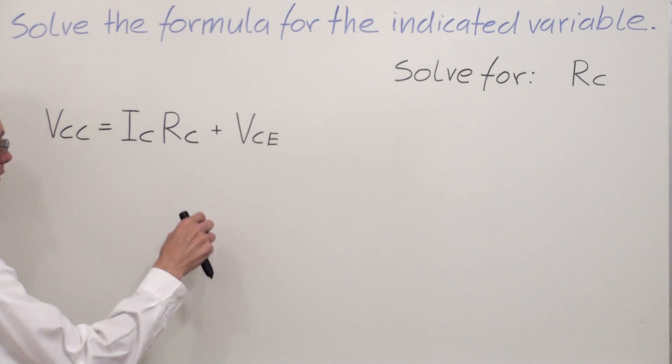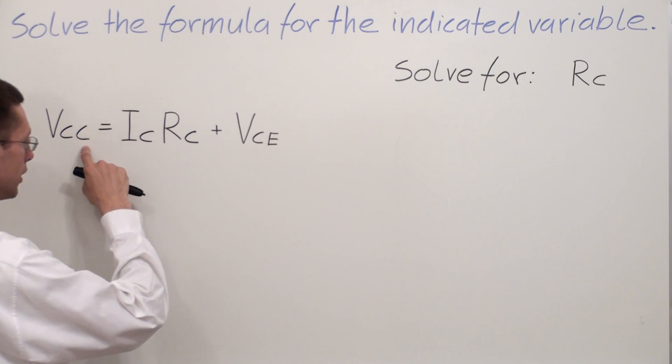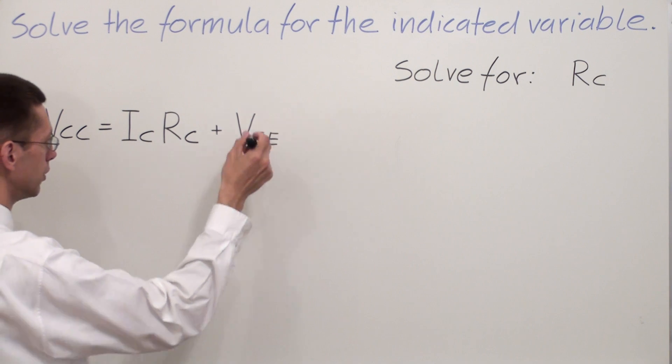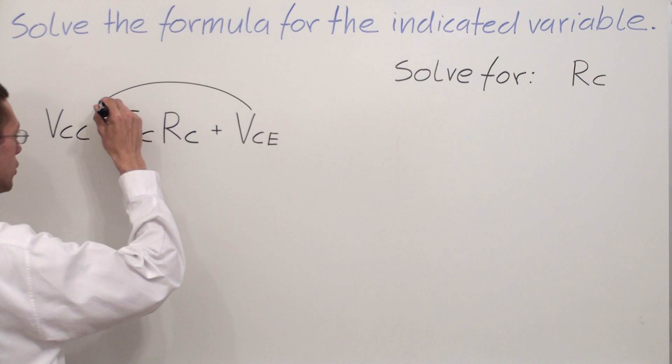We have to move VCE to the other side of the equal sign. Why? Because it has no RC next to itself. So I'm going to simply move VCE to the other side.